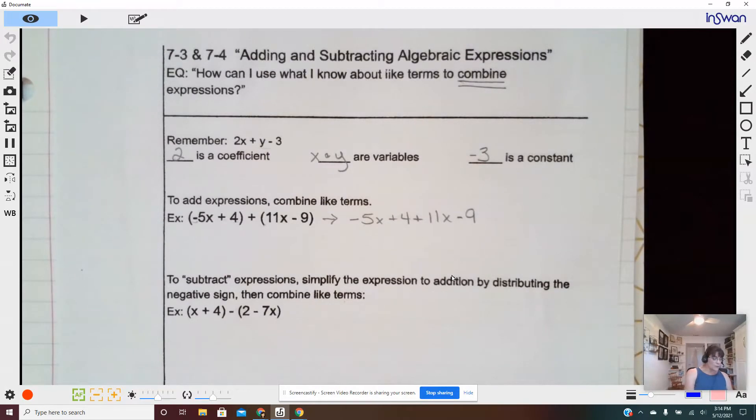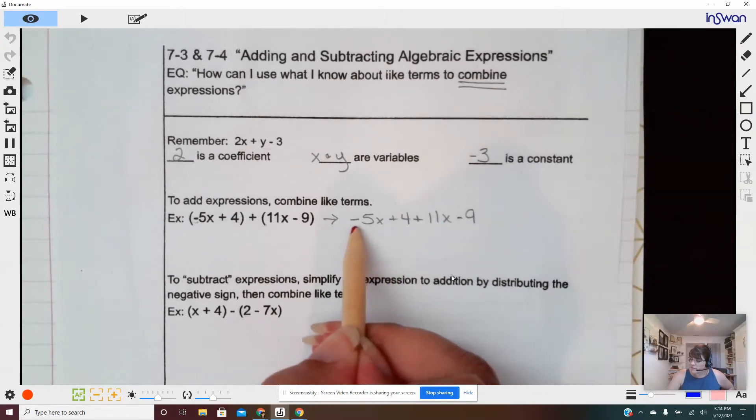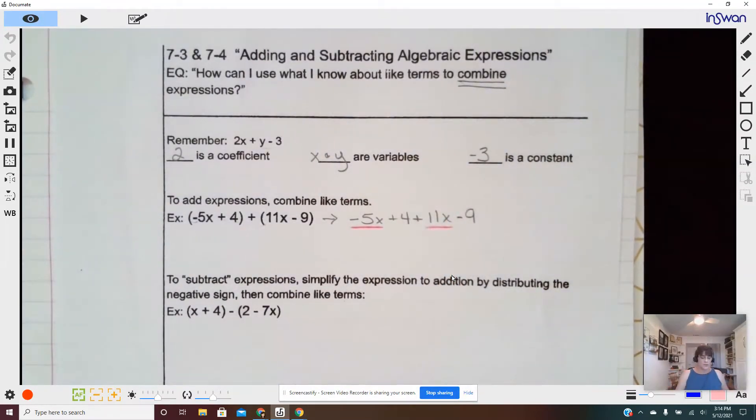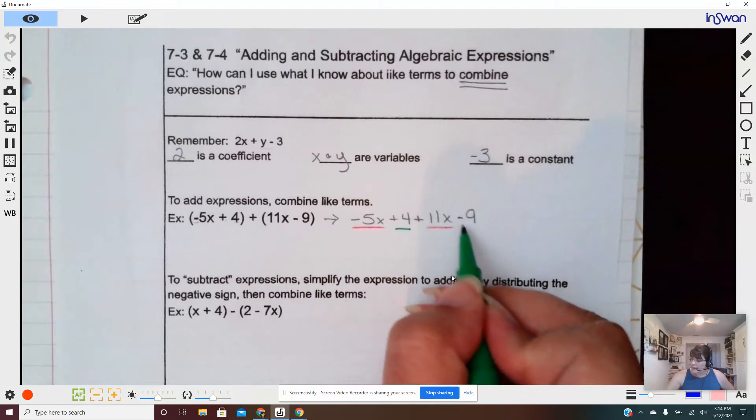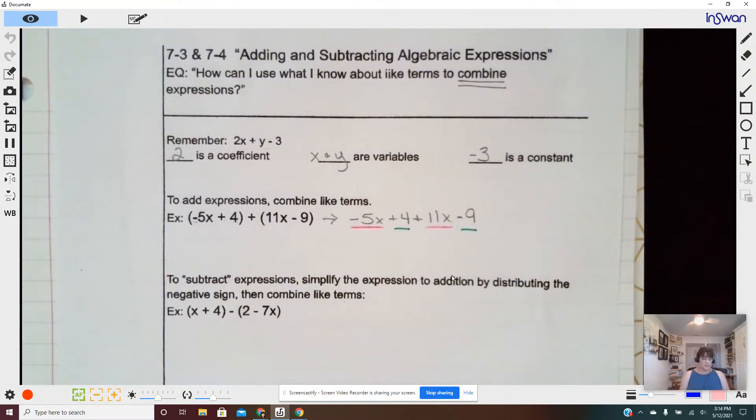Now, we want to point out some like terms. If you remember from our previous video, I looked at the idea of like terms, negative 5x is like 11x. They both have x to the first power. So they're like terms. Four and negative nine are like terms, honestly, because they're both constants. They have no variable.